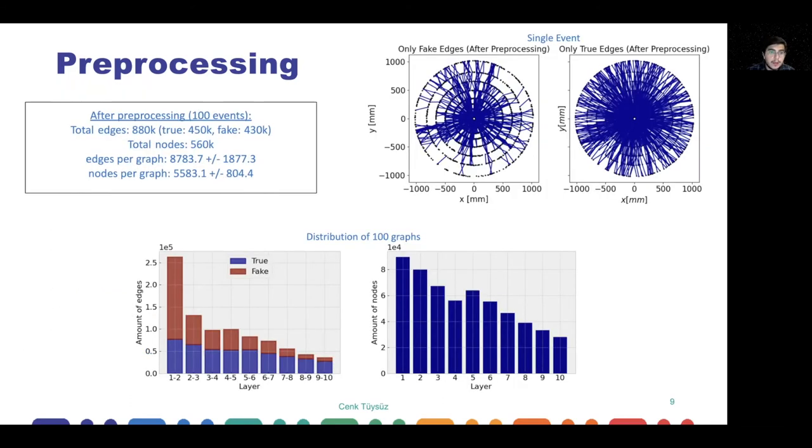Then we apply some criteria on each segment so we can create a meaningful graph. After applying this, we are constructing the graphs you can see on the right-hand side. On the left, you'll see the fake edges, the ones we want to get rid of. On the right side, you'll see the edges that belong to the particles. This means if two of these black dots belong to the same particle, this will be a true edge. Below, you can see a distribution of these 100 graphs. We only use 100 graphs out of 10,000 of the TrackML dataset because simulating quantum computers is really hard. We need to limit ourselves to get meaningful results in meaningful times.